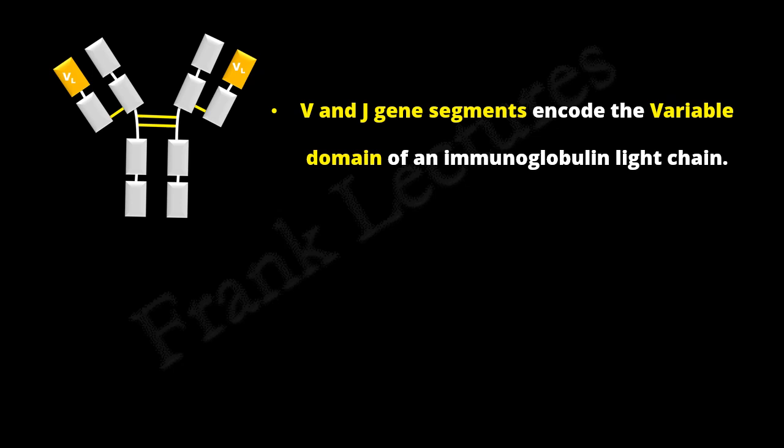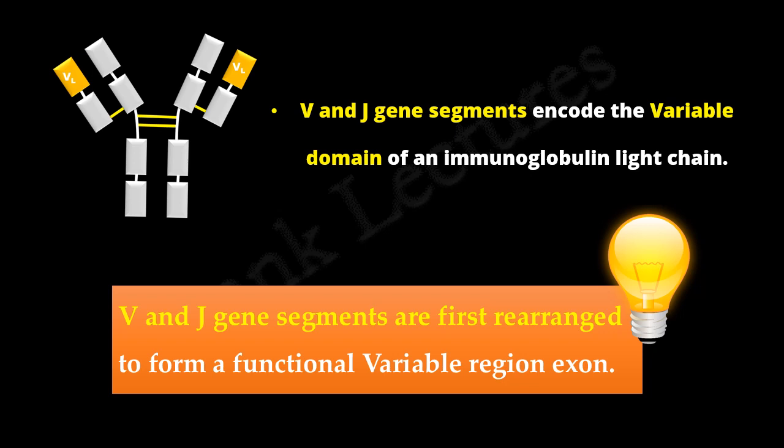It is the V and J gene segments which together encode the complete variable region of a light chain. V and J gene segments are first rearranged to form a functional variable region exon.